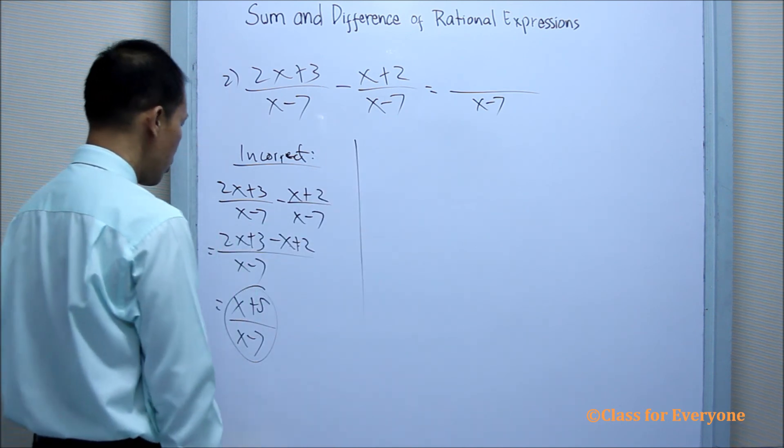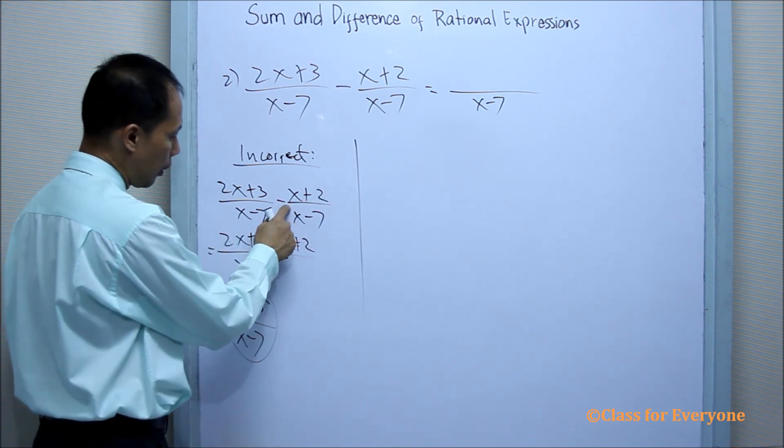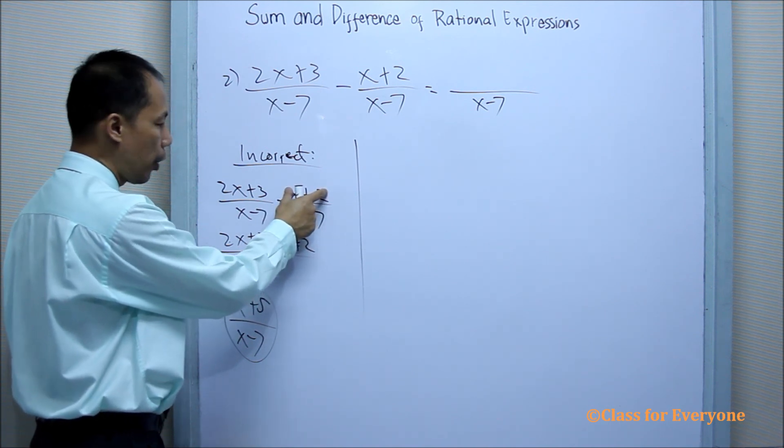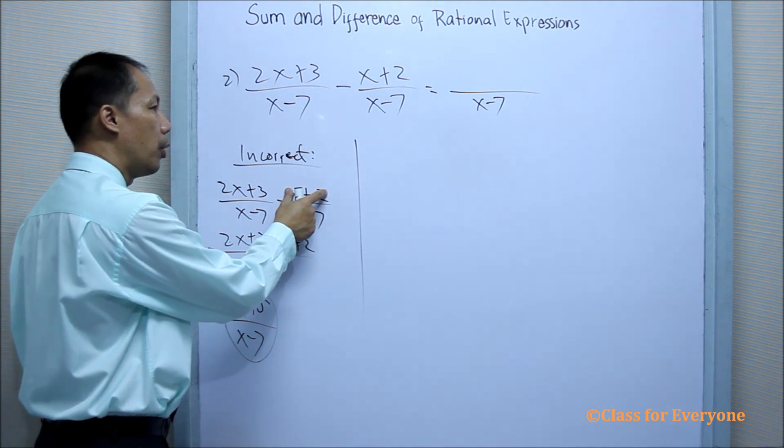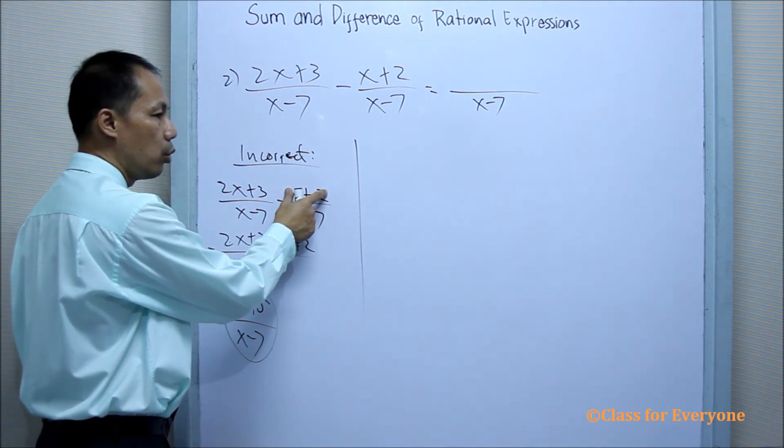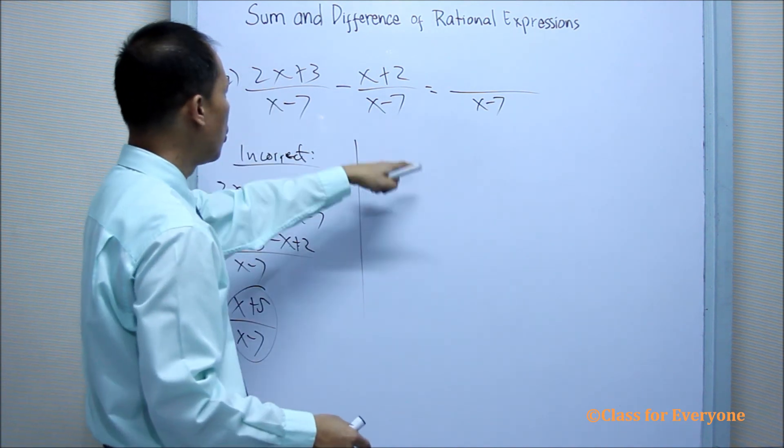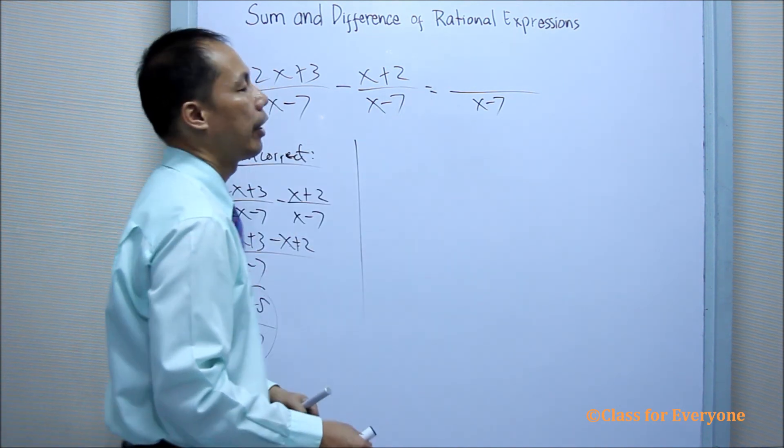Because the student do not recognize that this is considered as the subtrahend. So in subtraction of polynomials, we are going to change the sign of the subtrahend. So what we shall do here, this is the correct one.